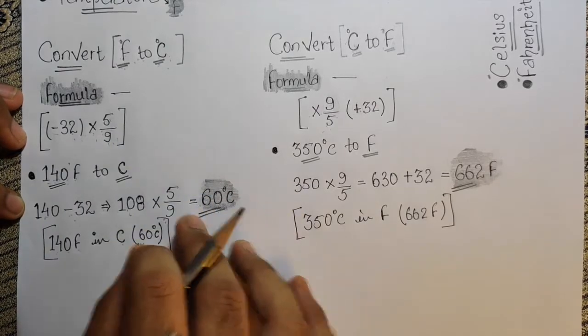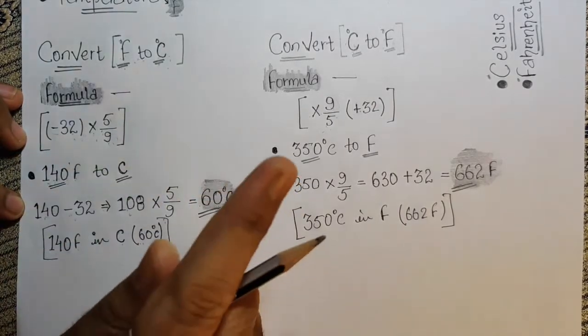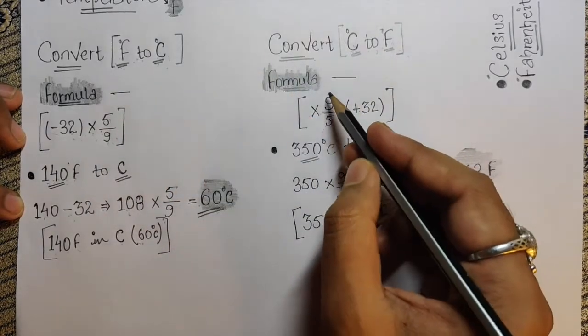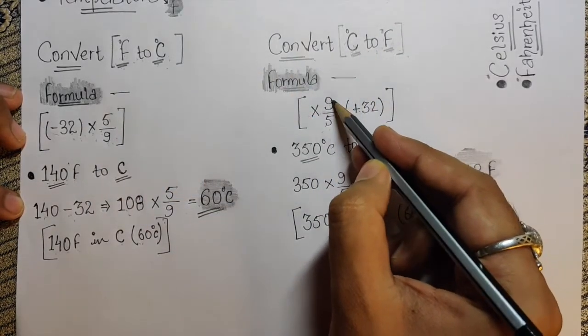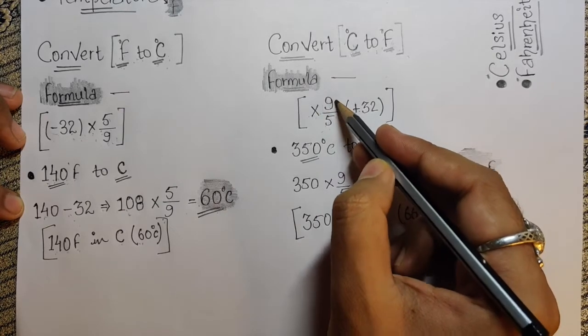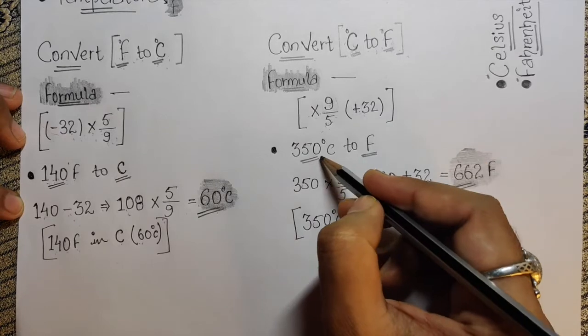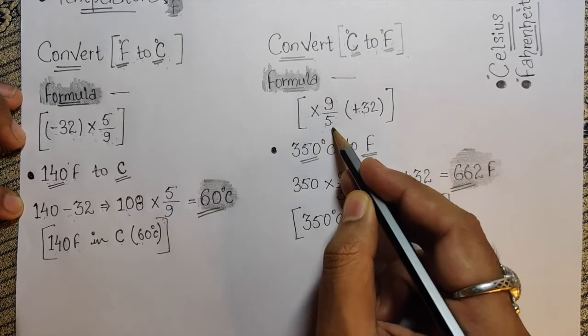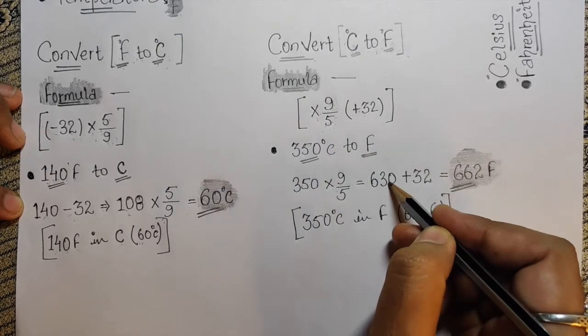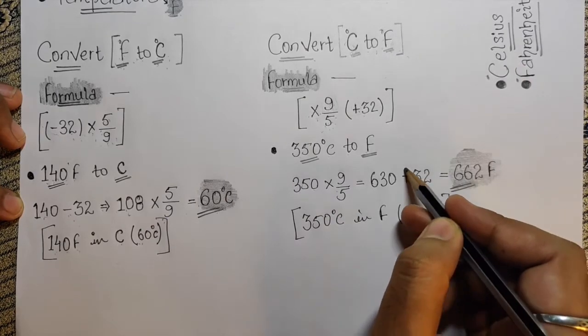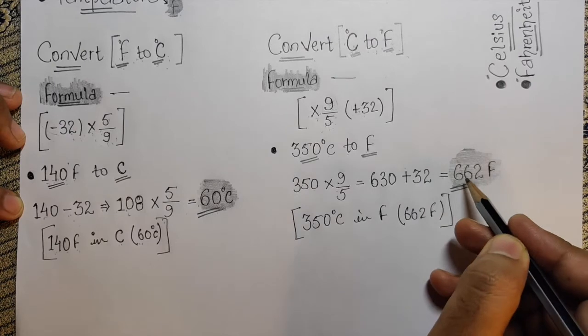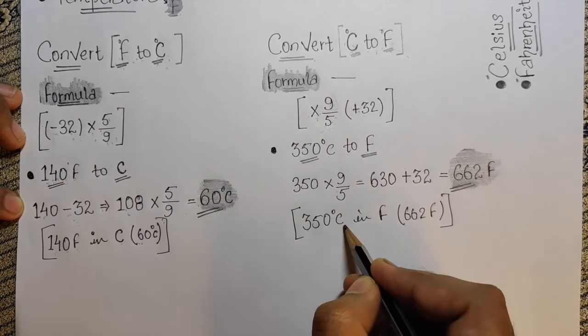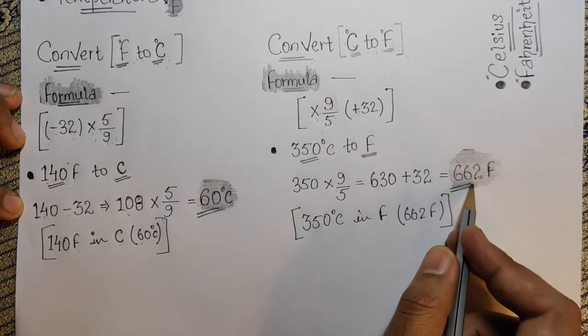This is the easiest formula to convert. Now let's see how to convert Celsius to Fahrenheit. The formula for C to F is: multiply by 9, divide by 5, then add 32. For example, 350 Celsius times 9 divided by 5 equals 630, plus 32 equals 662 degrees Fahrenheit.